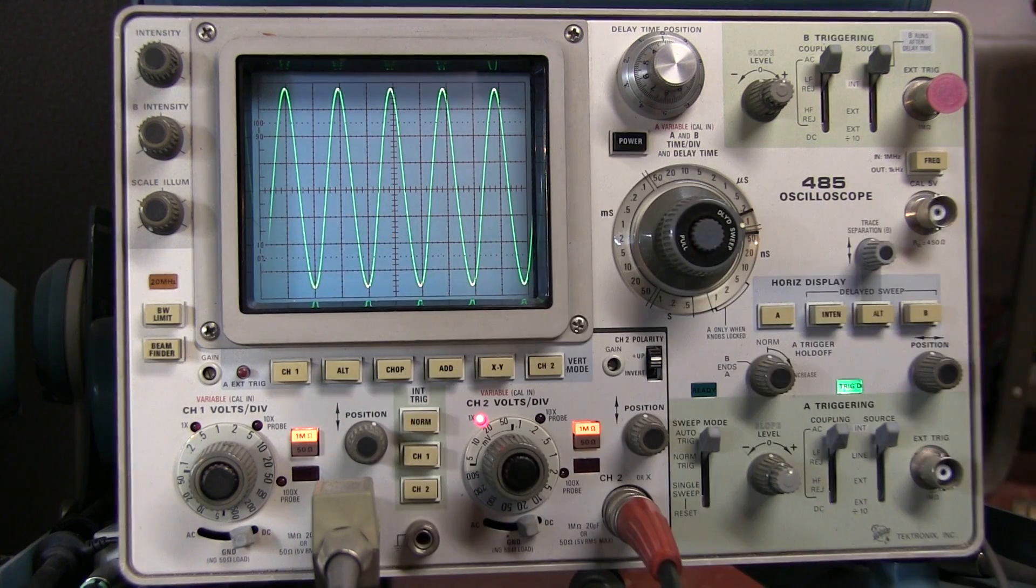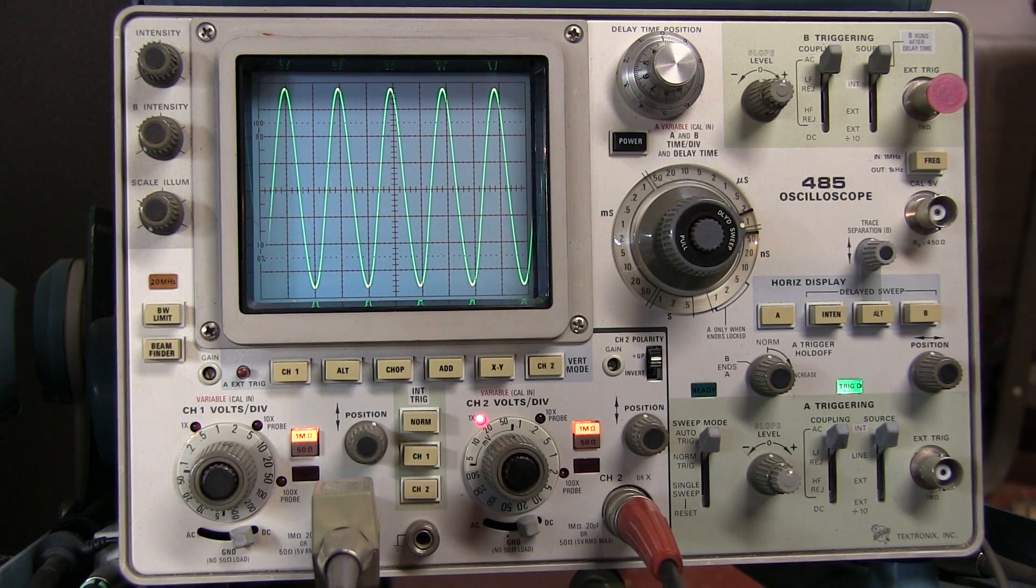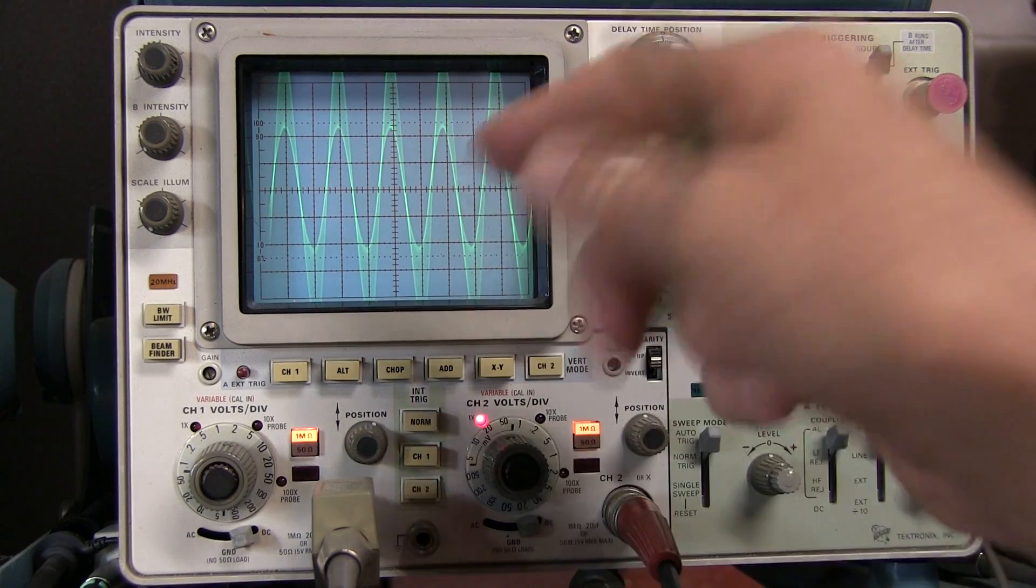Okay, we're looking at the unmodulated sinusoidal output of the Elenco signal generator. Let me flip the internal amplitude modulation on, and we can see it bouncing up and down.